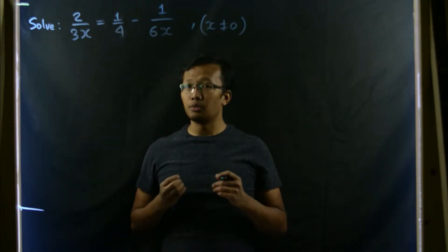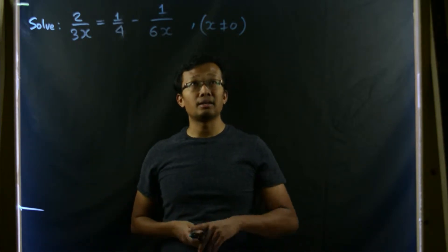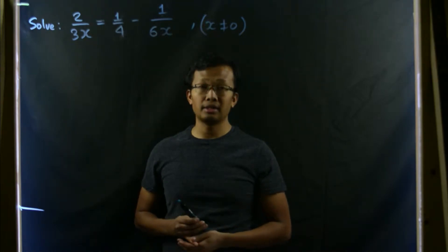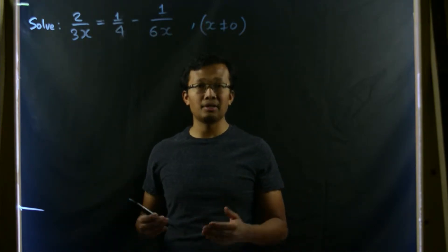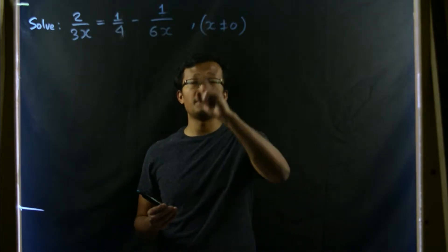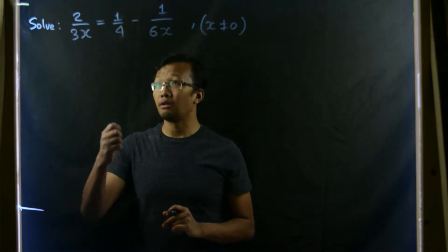And there is a possibility that after we solve this equation, we might end up getting 0 as an answer. So if it happens, then we should ignore that solution since that should be excluded. Now, let us solve this equation.